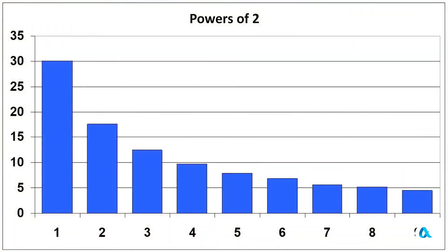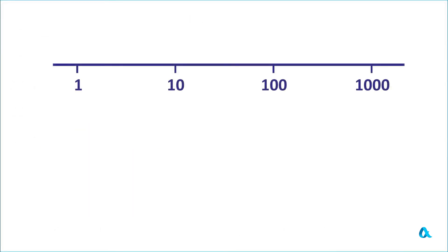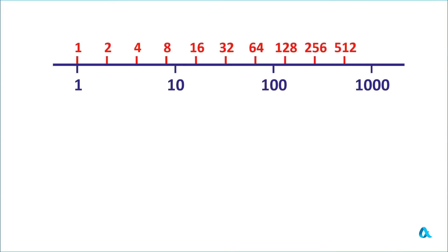The first digits in our sets come from different orders of magnitude, and the numbers themselves can differ by several orders. That's why it will be convenient to represent the growth of powers of two on a logarithmic scale, where the distance from 1 to 10, from 10 to 100, from 100 to 1000, and so on, is the same. On this scale, the distances between powers of 2 — from 1 to 2, from 2 to 4, from 4 to 8, and so on — will also be the same.